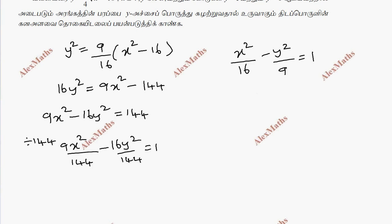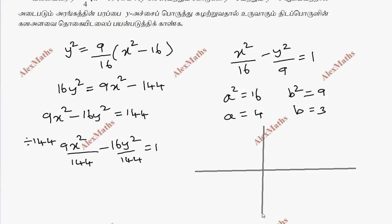This is a hyperbola. The standard form gives us a squared equal to 9 and b squared equal to 16 y squared. You can find the x-axis; y-axis vertex is at (4, 0) and (-4, 0). The hyperbola has two parts, and it is symmetrical.